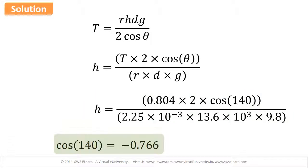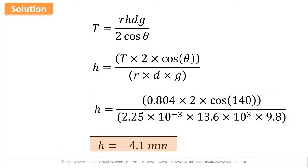The numerical value of cos 140 equals -0.766. Substituting this value in the above numerical expression, we get H = -4.1 mm.